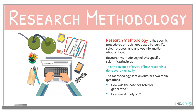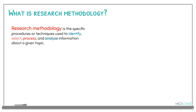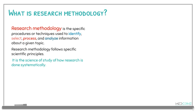Let's start by defining what research methodology is. A research methodology is a specific procedure or technique that is used in the identification, selection, processing, and analysis of information about a given topic and study. A research methodology follows specific scientific principles of research and can also be defined as a science of studying how research is done systematically.